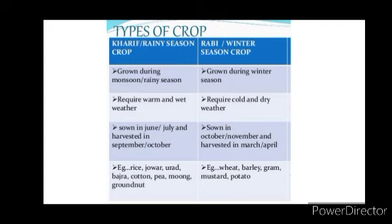Rabi crops are another type of crops grown during the winter season. These crops require cold and dry weather. Seeds are usually sown in October and November, and harvested in the months of March and April. Examples of Rabi crops are wheat, barley, gram, Bengal gram, mustard, potato, etc.